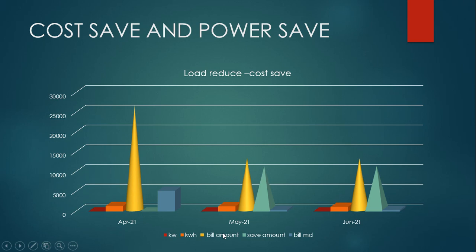Now this is the petrol pump electricity bill. This is the cost save and power save — how load reduction saves cost. Now this graph is showing a 3-month average.